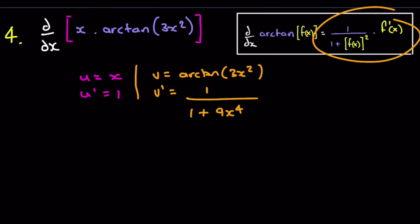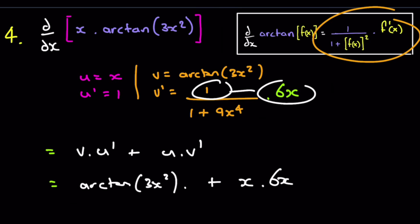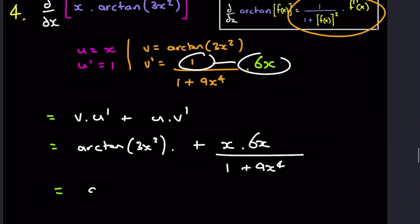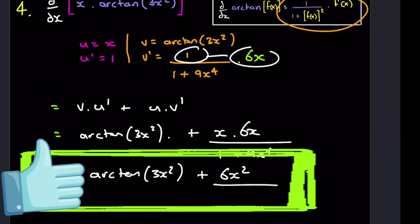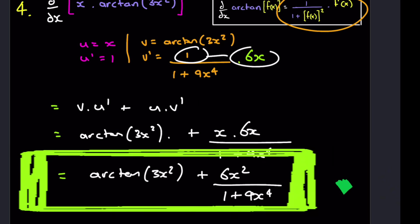So let's plug all of that into product rule. So we've got v. So that will result in v is arc tan 3x squared times du, which is just 1, so I just won't write that, plus u, which is x, times dv, which is going to be 1 over, well, it's actually, sorry, 6x times that. So it's going to be times 6x over 1 plus 9x to the 4. And we can just find a line down here as arc tan 3x squared plus 6x squared all over 1 plus 9x to the 4. And that is the end of question 4.